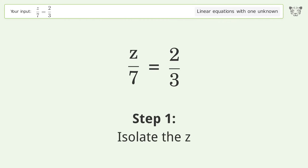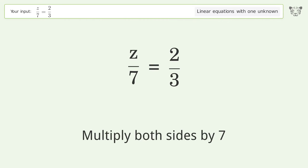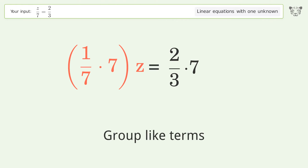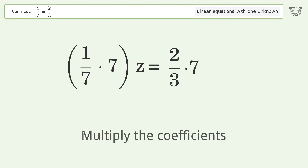To isolate z, multiply both sides by 7. Then group like terms and multiply the coefficients.